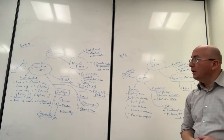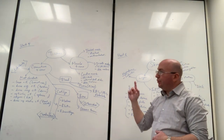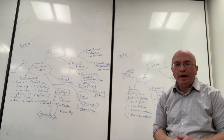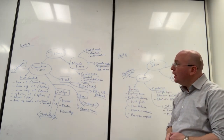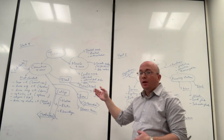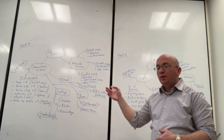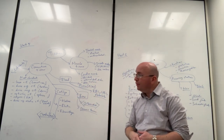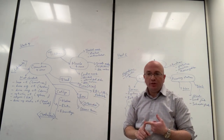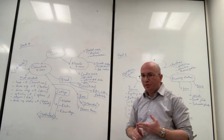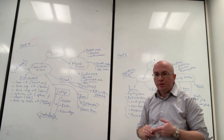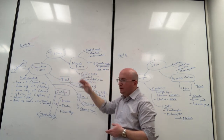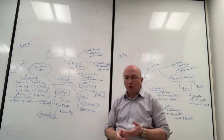Welcome to a recorded lecture for Unit 5 and Unit 6 for the Anatomy and Physiology 1 lab students. We have already talked about the first two tissue types in this histology unit - epithelial tissues and nervous tissue. Remember there are two other tissue types that exist: connective tissues and muscle tissues. Those are what we are going to talk about today.